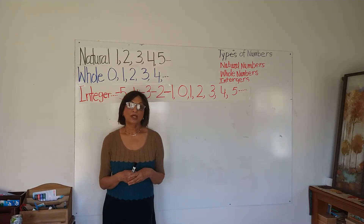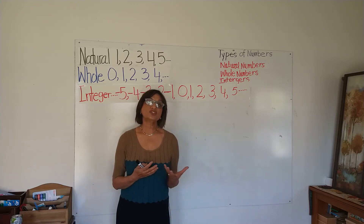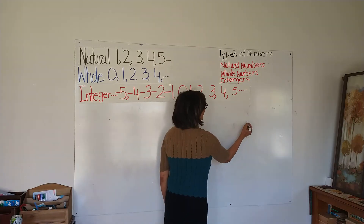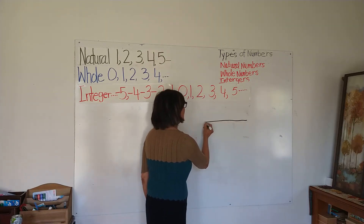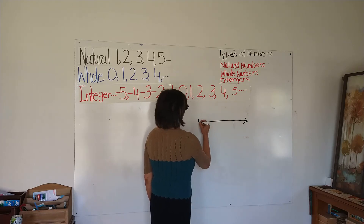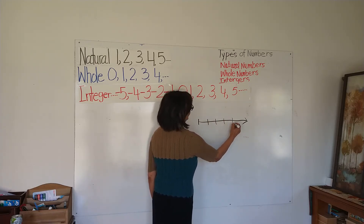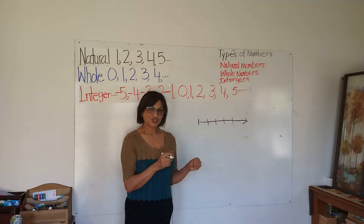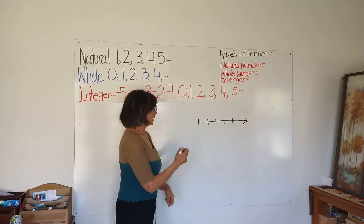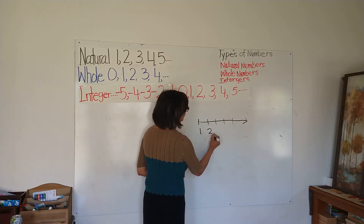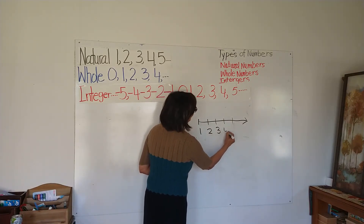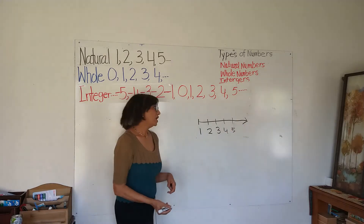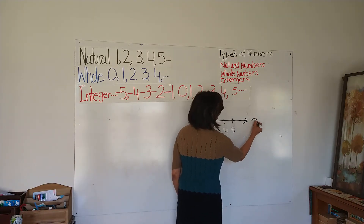So I'm going to show you these numbers on the number line. The number line is the best way to represent and show all the numbers. I'm going to make a number line. First, I'm going to show natural numbers on this number line.